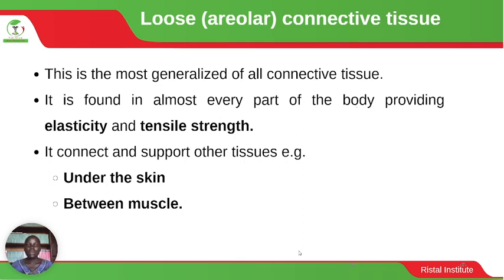The loose or areolar connective tissue is the most generalized of all connective tissue. It is found in almost every part of the body, providing elasticity and tensile strength — meaning it is elastic but cannot easily be broken. It connects and supports other tissues, such as under the skin and between muscles.